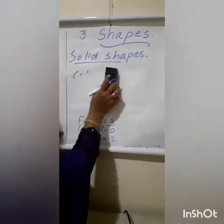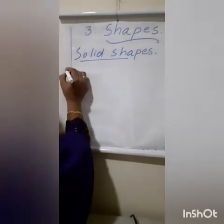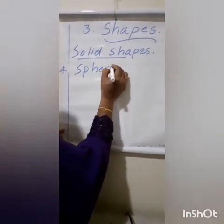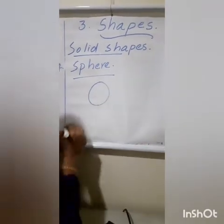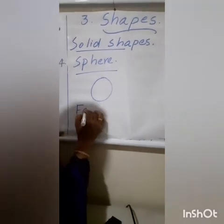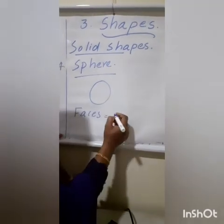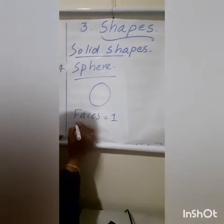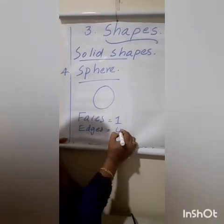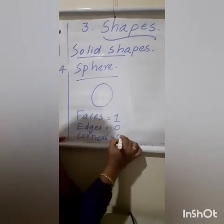Next, 4th one: sphere. This is the shape of a sphere. Faces — only one curved face. Edges — zero. Corners — zero.